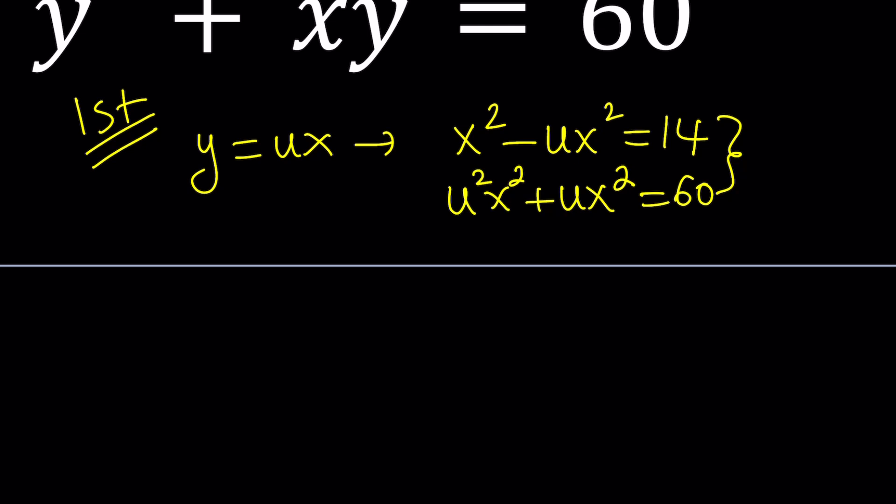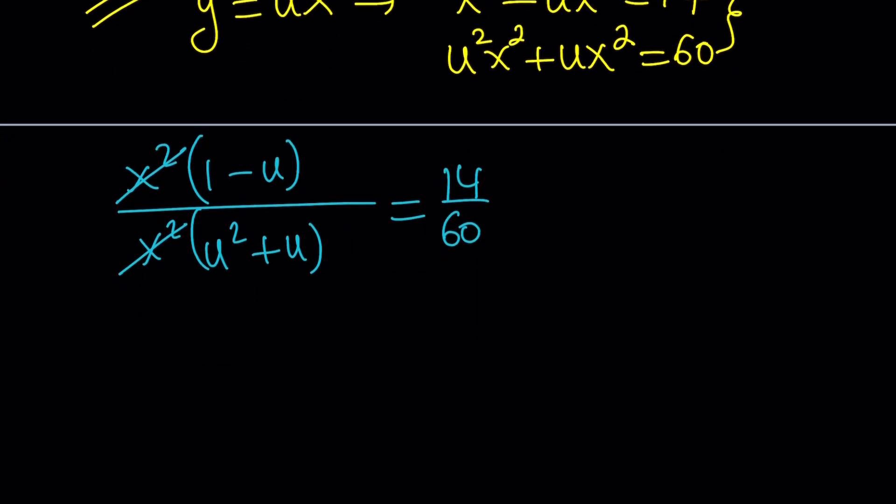This is a really nice way of approaching it because if you factor out x squared from both of these equations, you're going to be able to divide these equations side by side. And that's going to give you an even better result because x is going to cancel out and we're going to end up with u only. Let's simplify this fraction, write it as 7 over 30 and then cross multiply.